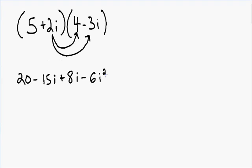Before we move on, let's go back and review for a second. We know that the imaginary number i is equal to the square root of negative 1, and if we square both sides of this equation, we get i squared on the left side, and on the right side the square and the square root cancel out, and we're left with negative 1. So we know that i squared is equal to negative 1. So every single place there's an i squared, we can replace that with a negative 1. Notice in our expression how we have an i squared, so I'm going to replace this i squared with a negative 1.